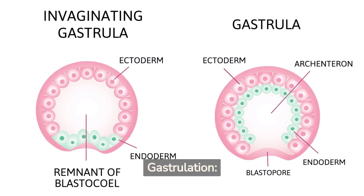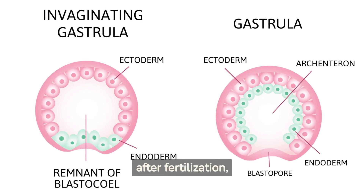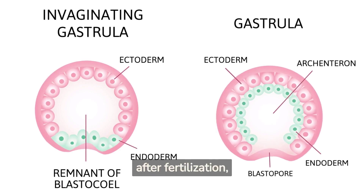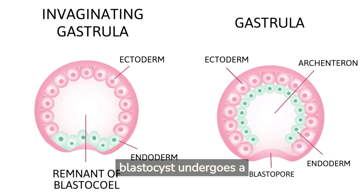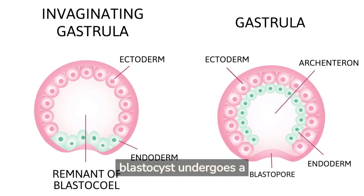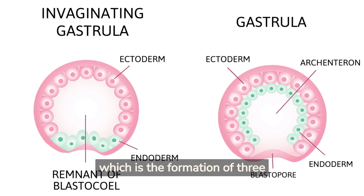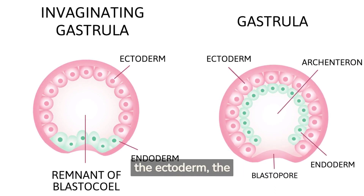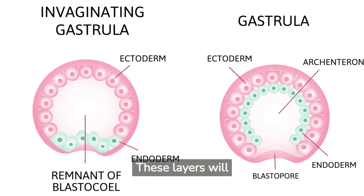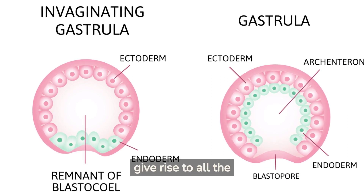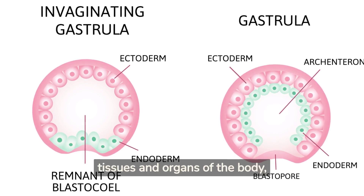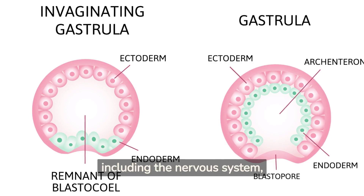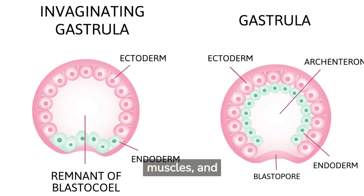Gastrulation. Around 2 weeks after fertilization, the inner cell mass of the blastocyst undergoes a process called gastrulation, which is the formation of three distinct layers of cells: the ectoderm, the mesoderm, and the endoderm. These layers will give rise to all the tissues and organs of the body, including the nervous system, muscles, and digestive system.